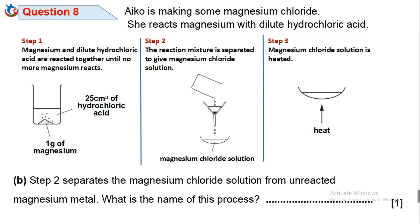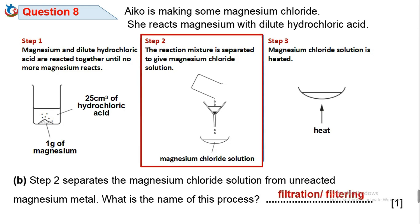Question 8b: Step 2 separates the magnesium chloride solution from unreacted magnesium metal. What is the name of this process? This method of separation is called filtration — the process in which solid particles in a liquid are removed using a filter paper that permits the fluid to pass through but retains the solid particles. The residue is the solid that remains on the filter paper, and the liquid that passes through is called the filtrate.